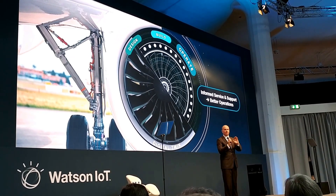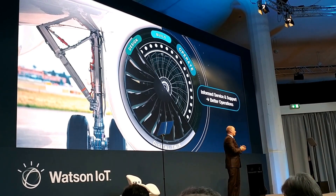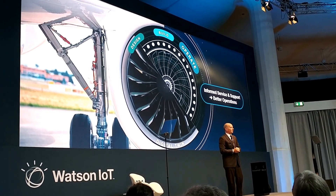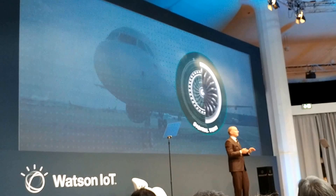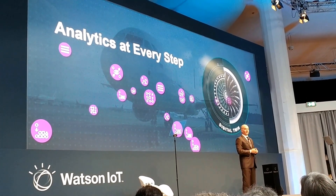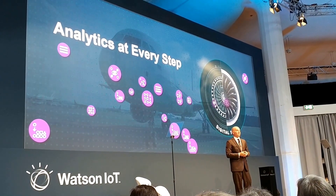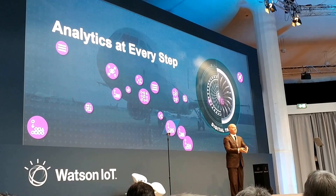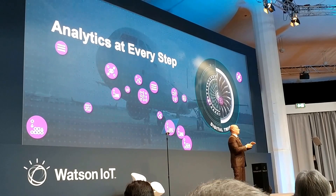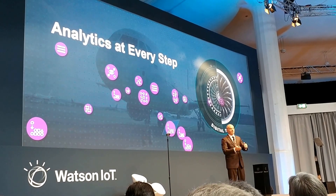Simply put, with digital twin — a virtual representation of the elements and the dynamics of an IoT device — it affects the design, the build, and the operations of how products come together. There are essential capabilities that must be present. First, you have to apply analytics at every step. The amount of information involved, whether for a small device or a complex one like an automobile or aircraft, is staggering. Analytics must be real-time, operational, quality-focused, and predictive.